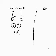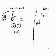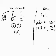Work out the relative molecular mass of rubidium chloride. The relative atomic mass of rubidium is 85, and for chlorine it's 35.5. So we have 1 rubidium contributing 85, and 1 chlorine contributing 35.5. The relative molecular mass of rubidium chloride is 120.5.